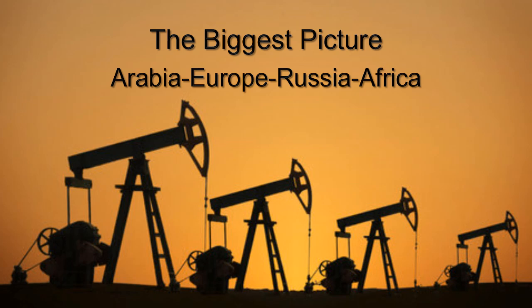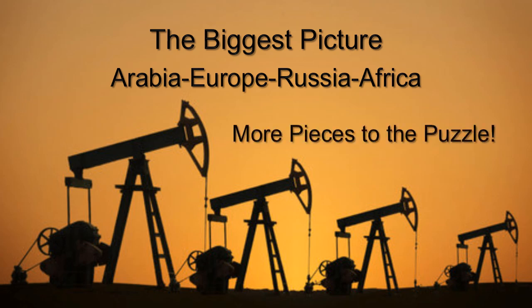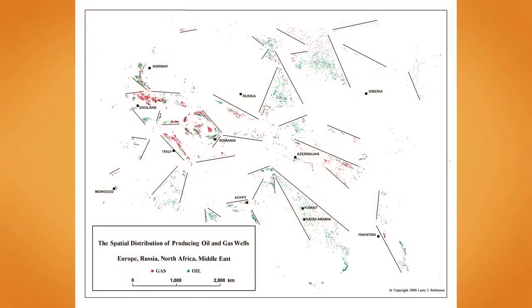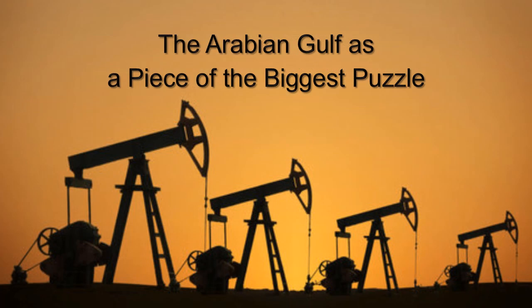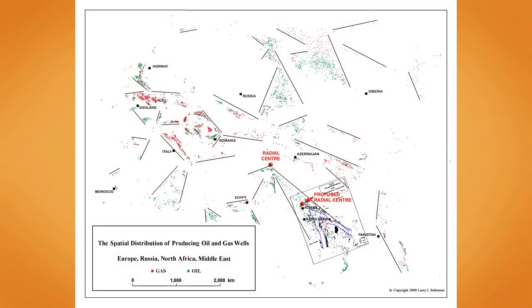On to the biggest picture, including Arabia, Europe, Russia, and Africa. Oil and gas distribution in the biggest picture — one will notice that this map includes the oil and gas distribution all the way from Norway in the northwest to Pakistan in the southeast. Here is the proposed radial center of the Arabian Gulf. The center, which is currently located in Iraq, is approximately 1,000 kilometers southeast of the true radial center.